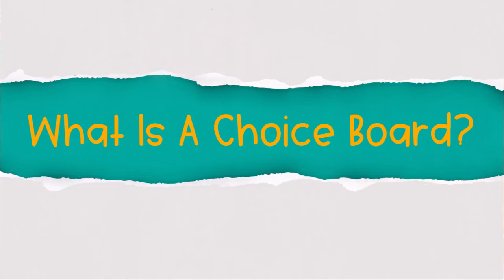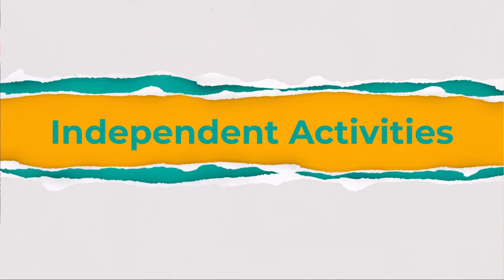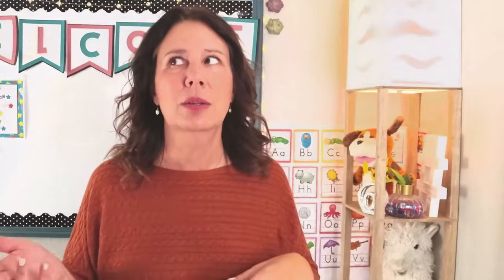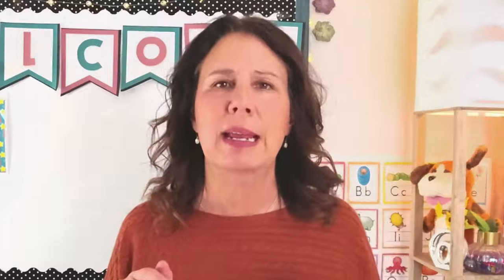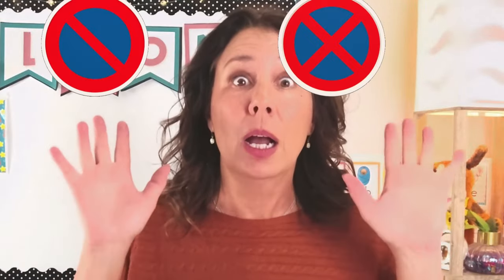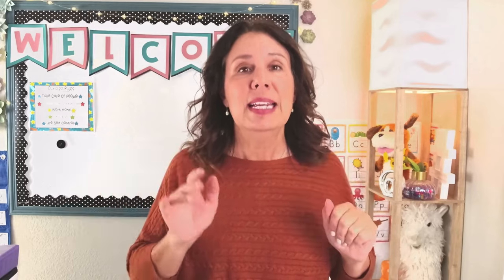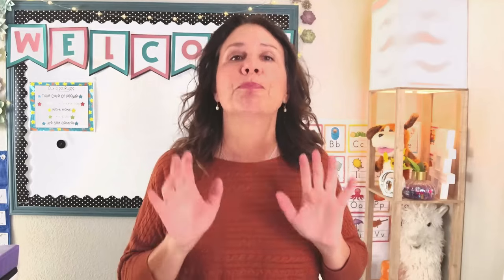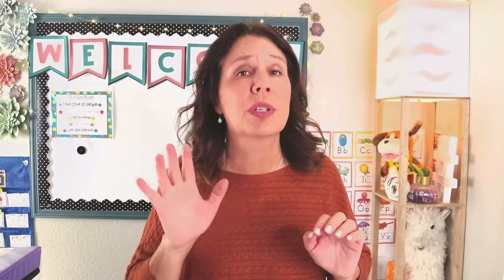First of all, what is a choice board? A choice board basically is activities the kids could do after they were done with an assignment. You know, you're walking across the room and all of a sudden you have about four kids saying, 'I'm done, now what?' They need to have something to do. Kids don't get done at the same time. If they are left to their own devices, they're going to find something they should not do. So you control the chaos — you give them choices to choose from.